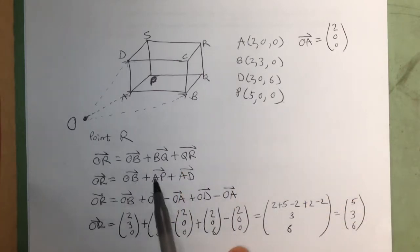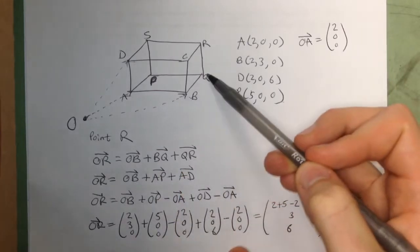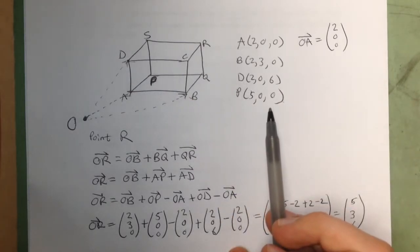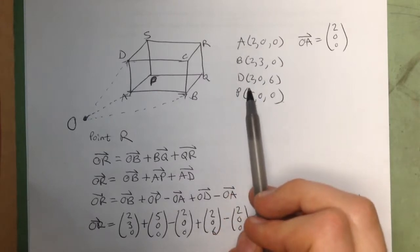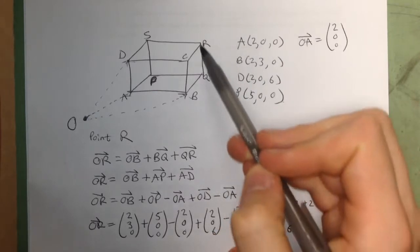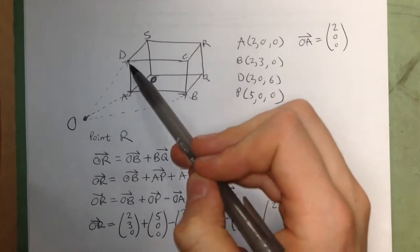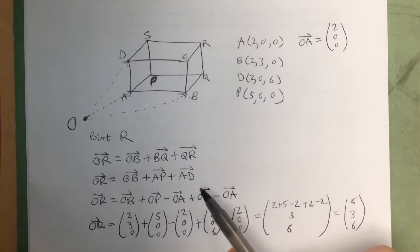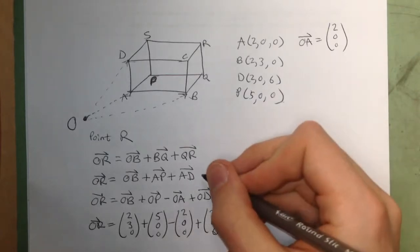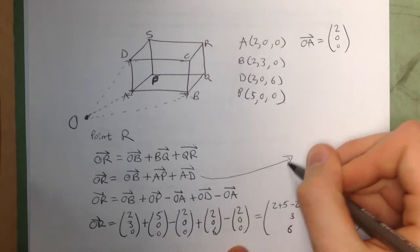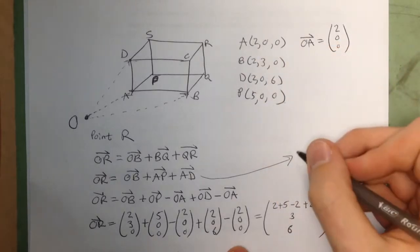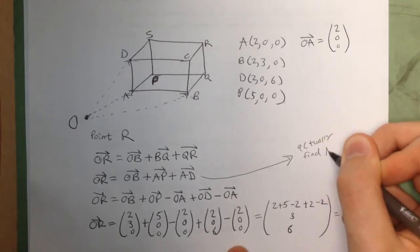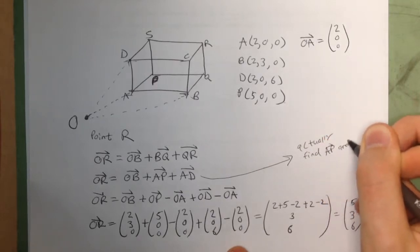And so then I changed BQ for a vector I knew, which was AP, because I have point P and I have point A, so I can easily find the vector from A to P. And then I did the same thing with QR, I exchanged that for AD, because I have both of those points. And then what you could do here, instead of going to this step, is you could take these points and you could actually find AP and AD if you really wanted to know what those vectors were.